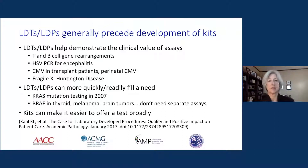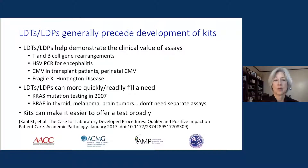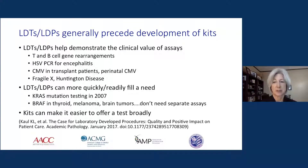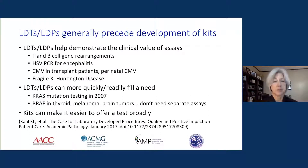Some great examples would be T and B cell gene rearrangements that we all started doing around 1990, and herpes simplex virus PCR for encephalitis, where we could begin to get a rapid answer and avoid a brain biopsy. These are all assays that arose out of clinical laboratories preceding a kit. Ultimately kits became available based upon the tremendous amount of information and clinical studies published by laboratories doing this work.